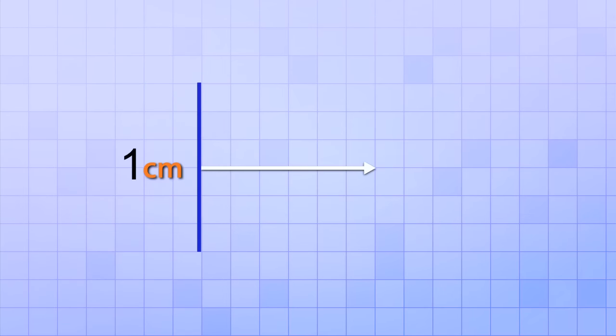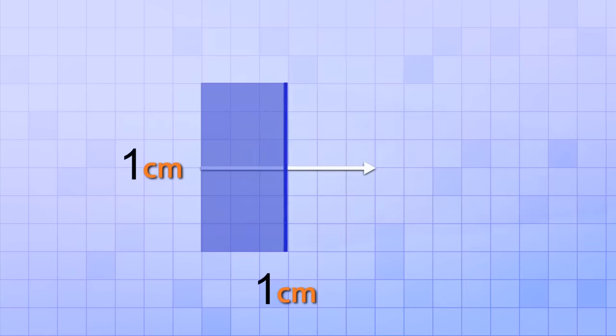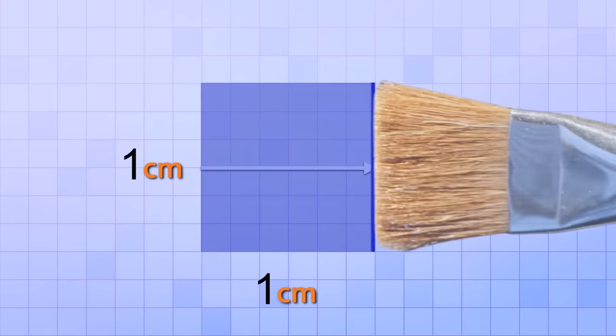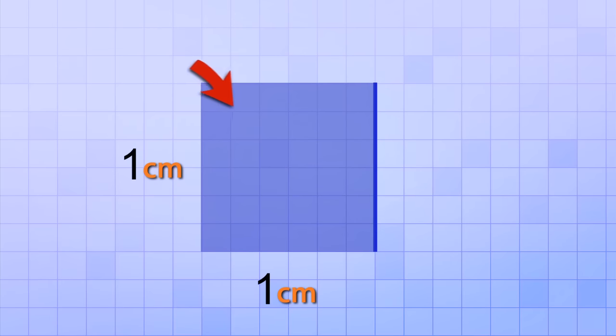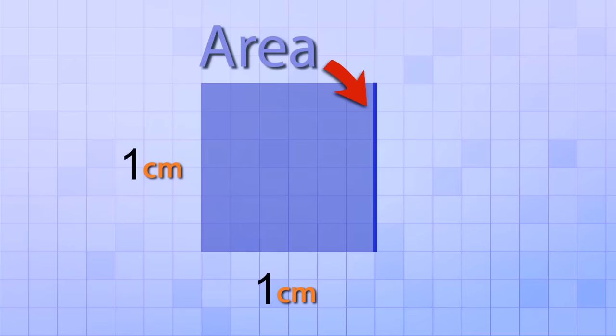To help you understand what area is, let's start by imagining a line that's 1 cm long. Let's imagine moving that line in a perpendicular direction a distance of 1 cm. But while we move it, it leaves a trail, almost like the end of a paintbrush. By moving the one-dimensional line that way, we formed a two-dimensional shape, and all of the space we covered along the way is the area of that shape — which, as you can see, is just a square.